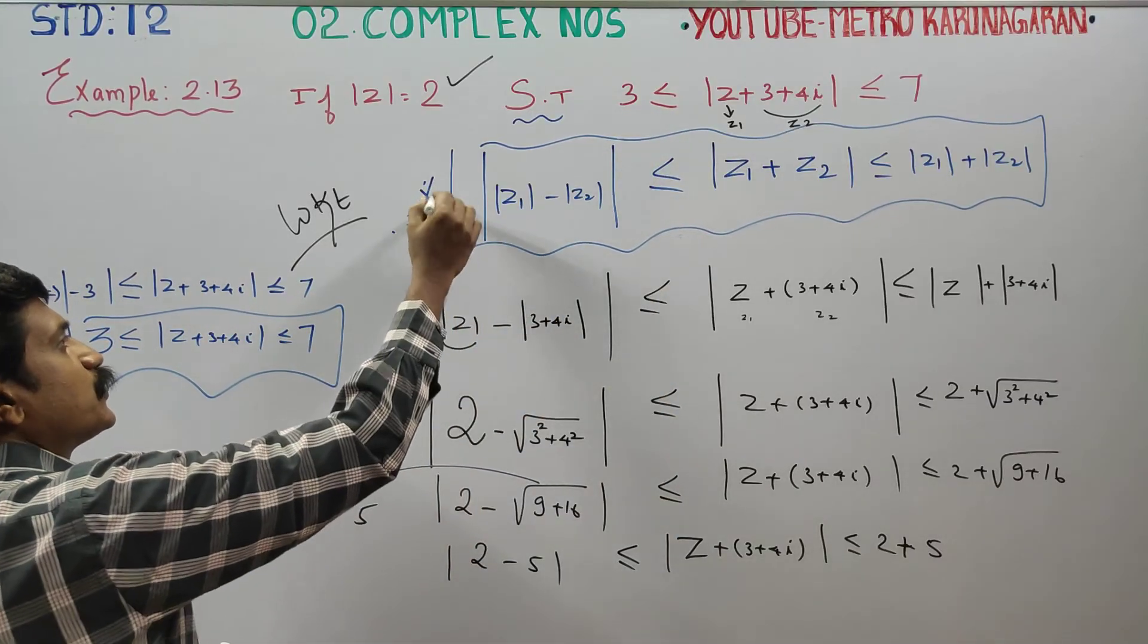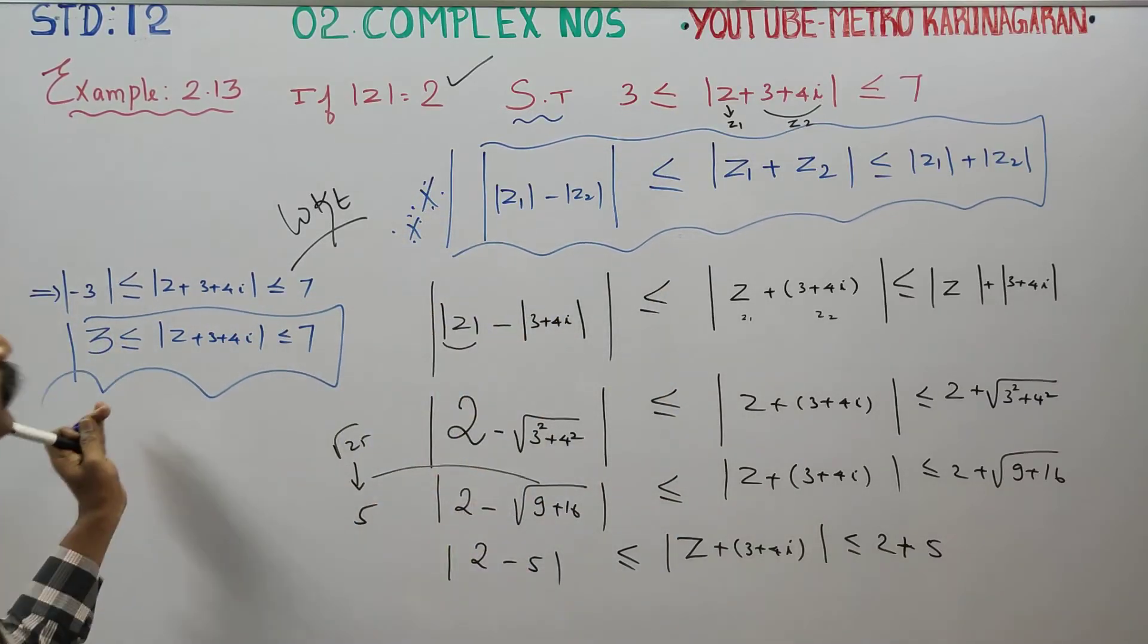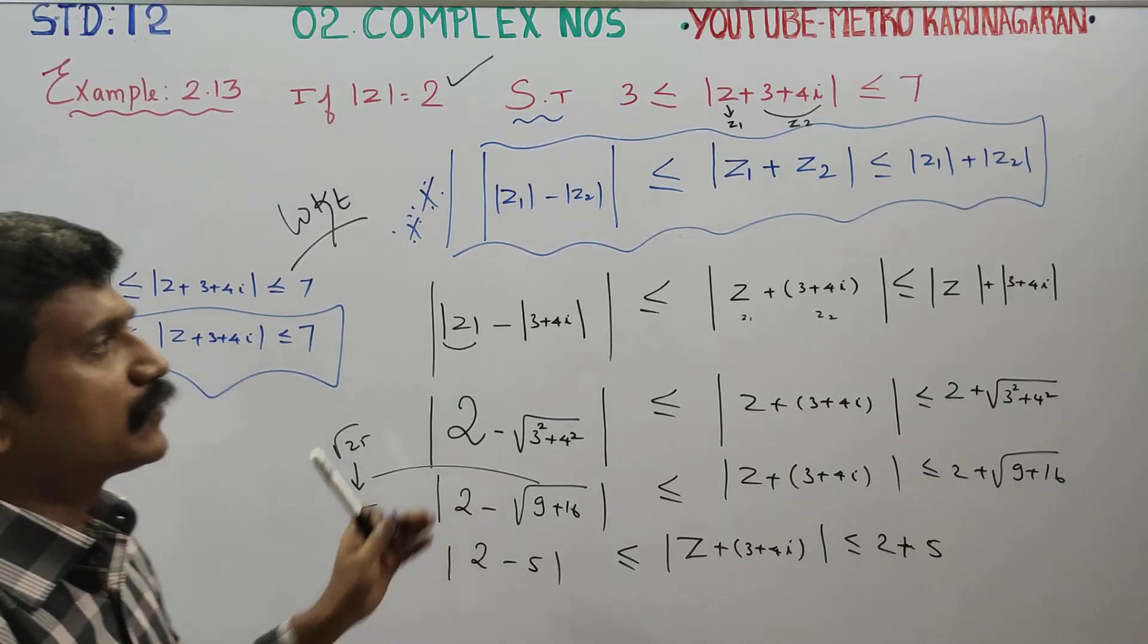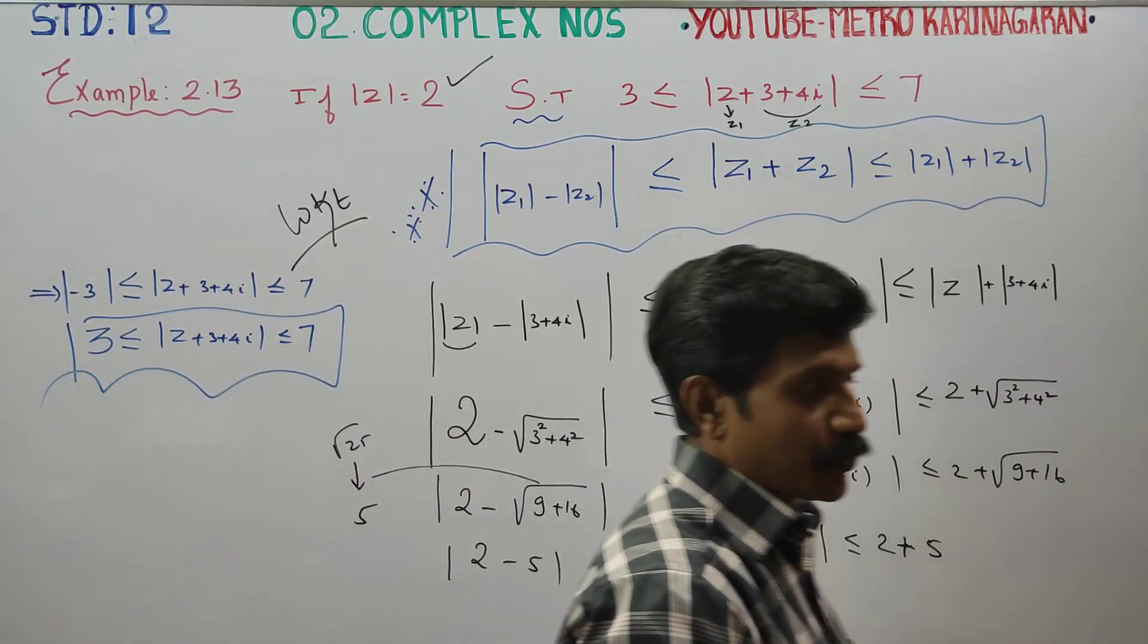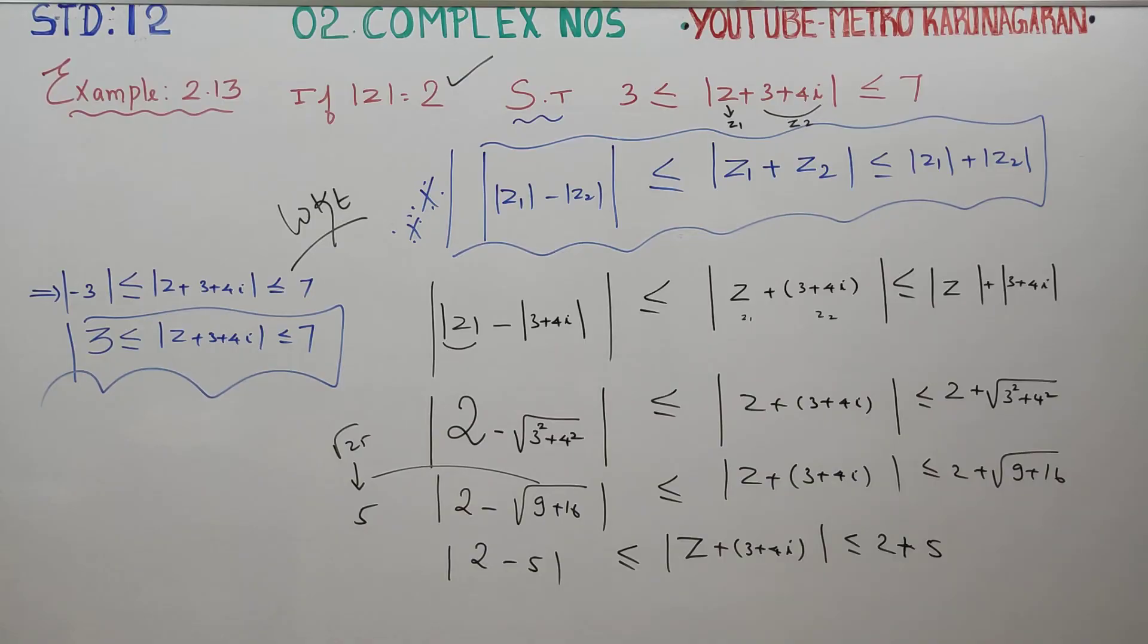When you have this type of double-sided inequality to prove, the best formula to use is this method. Practice the example from your book on one side, then the other side, and you'll comfortably land at the answer. Thank you.